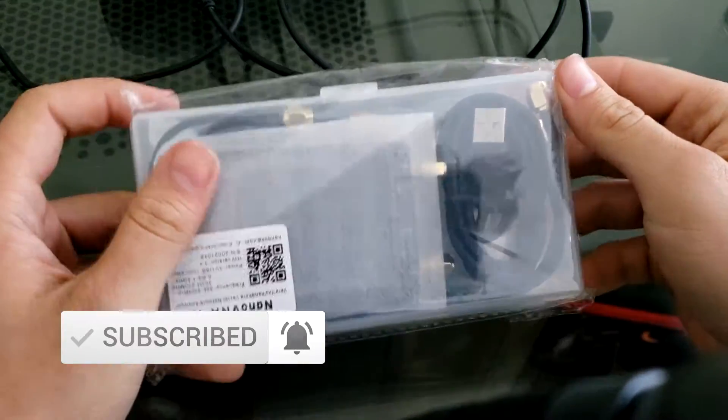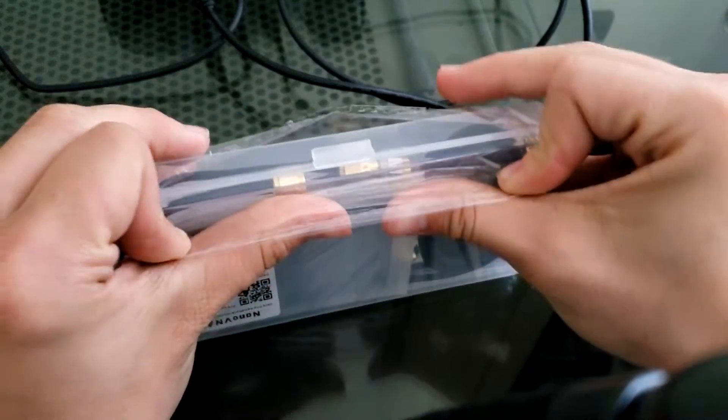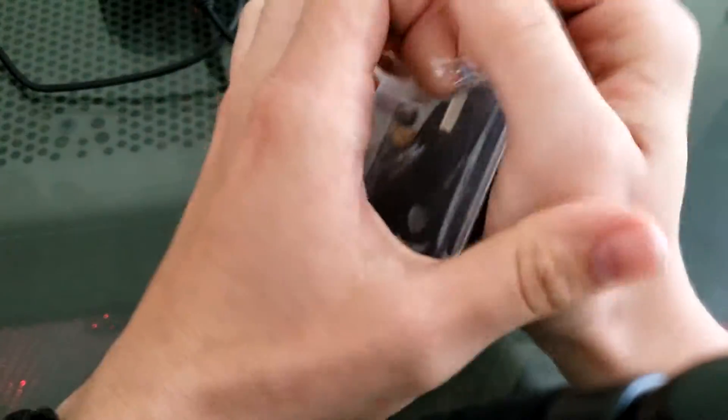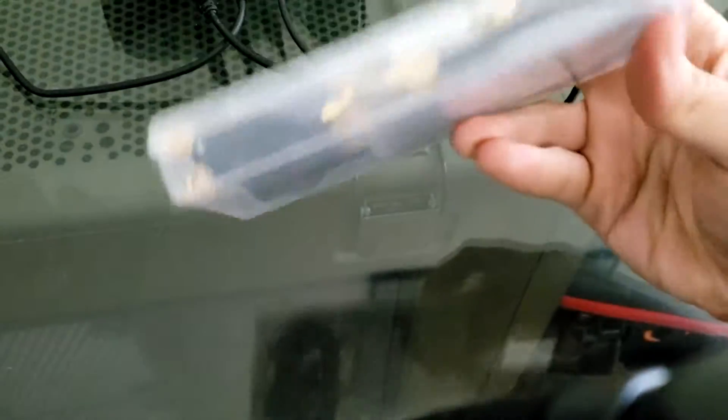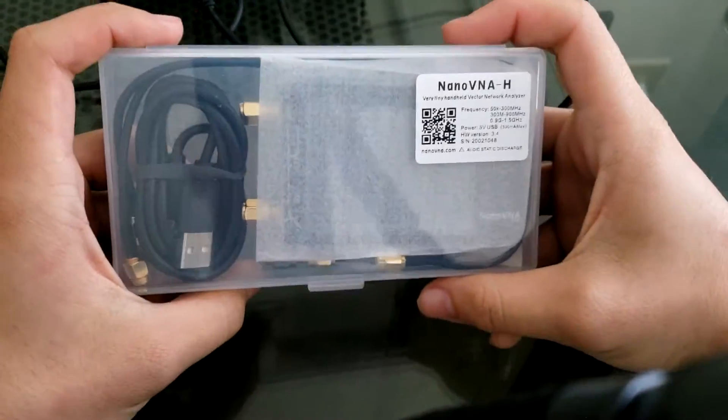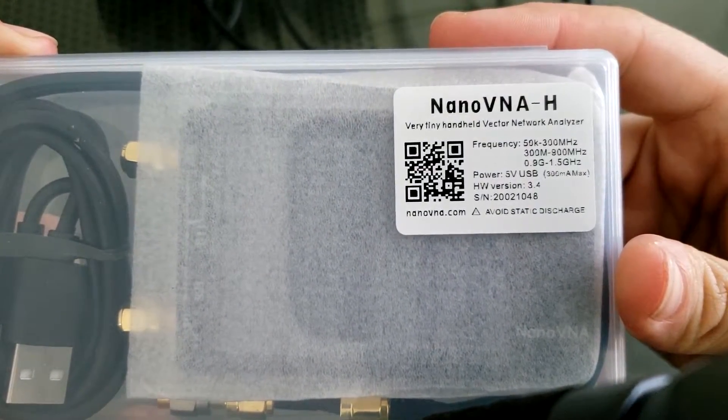It looks like it came with a neat little case. There's some more plastic to rip off here. Here's the box - Nano VNA, very tiny handheld vector network analyzer.